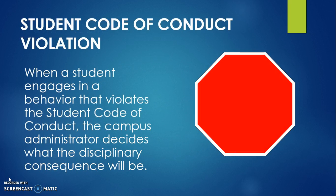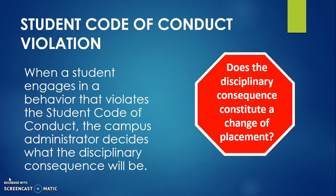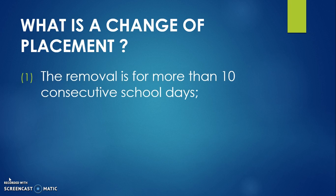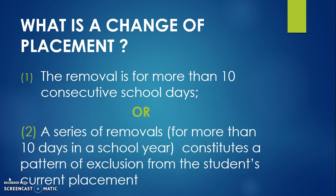When a student engages in a behavior that violates the student code of conduct, the campus administrator decides what the disciplinary consequence will be. When we have an offense that involves days of removal, we are at our first decision point: does the disciplinary consequence constitute a change of placement? A change of placement occurs when a student with a disability is removed from his or her current educational placement for more than 10 consecutive days, or for a series of days that constitute a pattern totaling more than 10 school days.